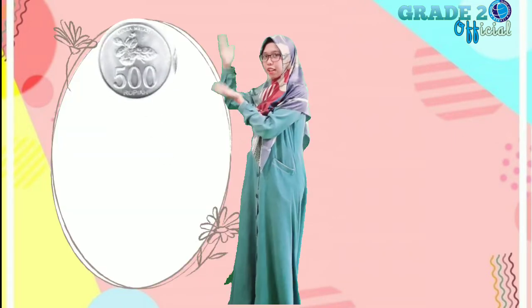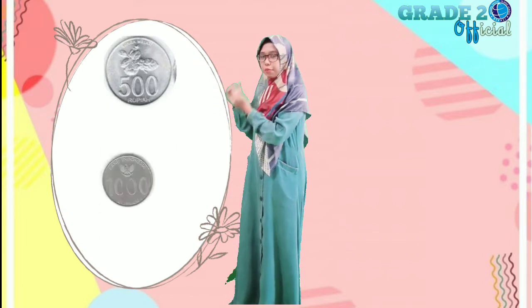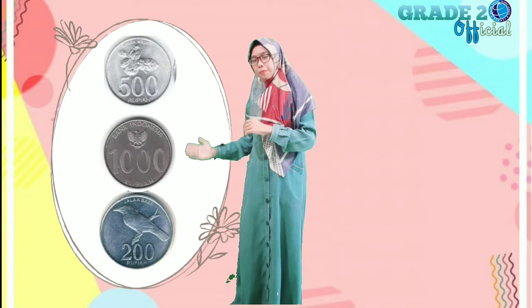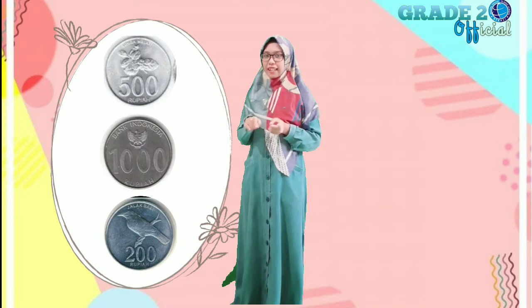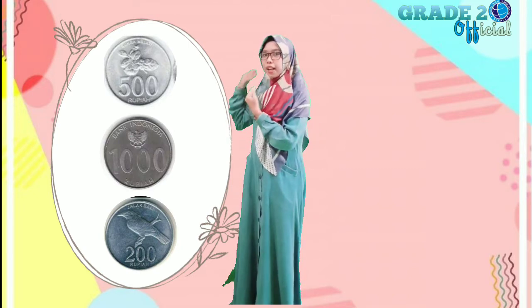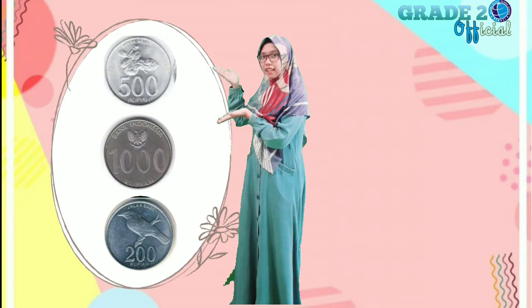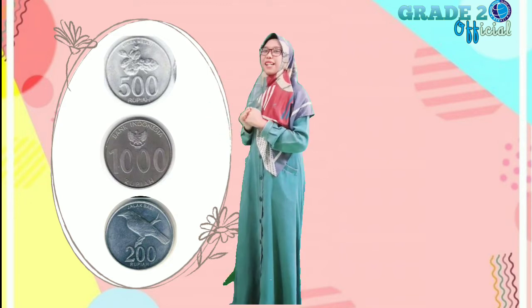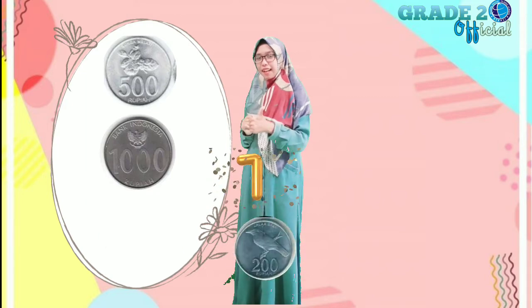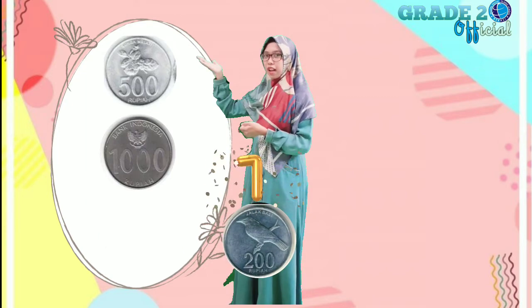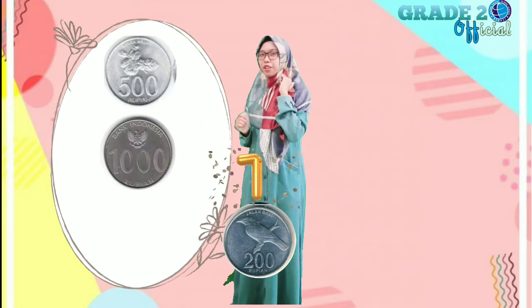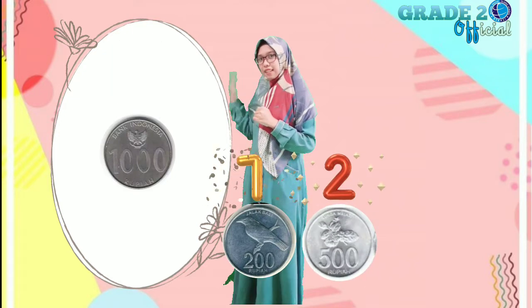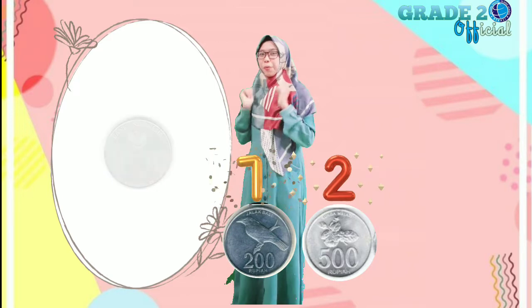Contoh yang kedua. Miss Menuh punya gambar 500 rupiah, ada 1.000 rupiah, dan ada 200 rupiah. Yuk teman-teman, kita urutkan nominalnya dari yang lebih kecil ke yang lebih besar. Yang paling kecil adalah 200 rupiah. Selanjutnya, 500 atau 1.000 ya? Benar sekali jika kalian menjawab 500 rupiah. Dan yang terakhir ada 1.000 rupiah.